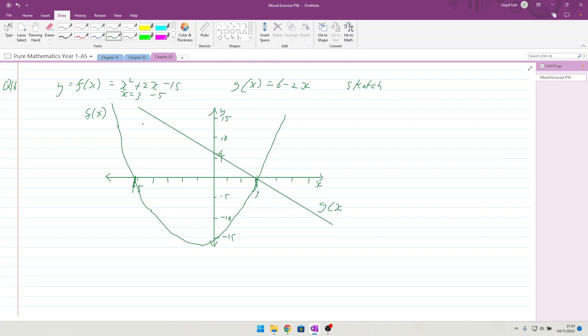Okay, there's the sketch done. So with the sketch done I can see that one of the points of intersection is x equals 3, and the other point of intersection is going to have to be smaller than minus 5. So let's just quickly put these two together and solve them simultaneously. So x squared plus 2x minus 15 equals 6 minus 2x.